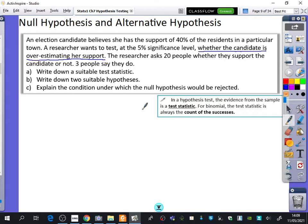So it's a bit like the game we were just playing, apart from it's not a game anymore. It's about doing a survey with someone. So let's start off by thinking about writing down a suitable test statistic. I've written inside this blue box that in a hypothesis test, the evidence from the sample is a test statistic. For binomial, the test statistic is always the count of the successes. So in this case, the test statistic could be let X be the number of people who support the candidate.